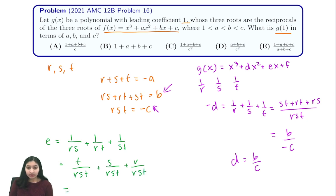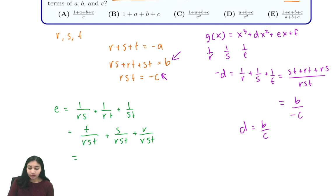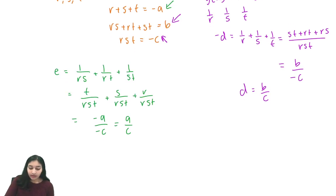This can just be expressed as (r + s + t)/rst, which from these we know is negative a over negative c, or a/c.